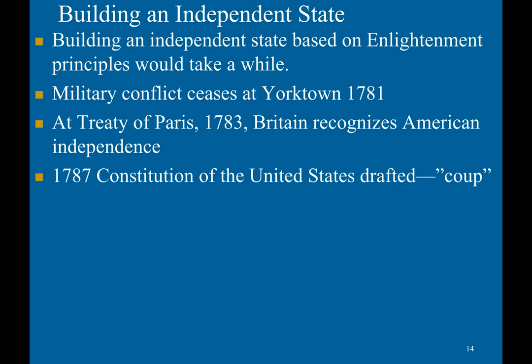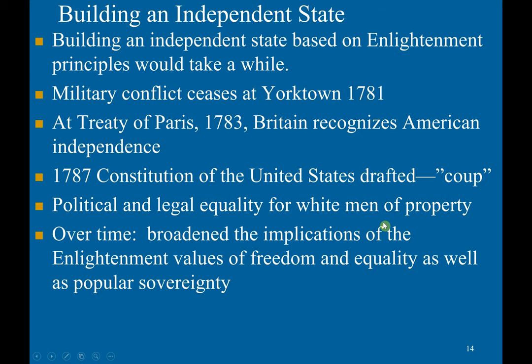In 1787, the Constitution of the United States was drafted to replace the ineffective Articles of Confederation that had led to a very weak, decentralized federal government. It guaranteed political and legal equality for white men with property. However, over time the United States would broaden the implications of Enlightenment values of freedom, equality, and popular sovereignty to all Americans.